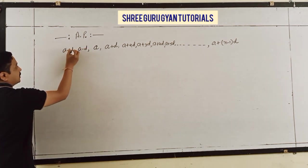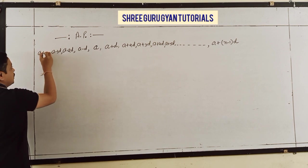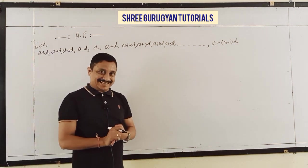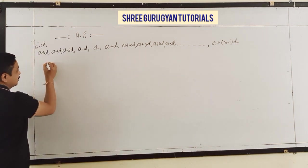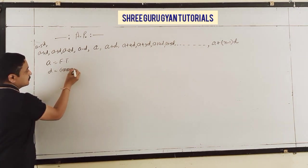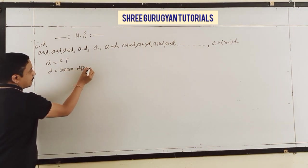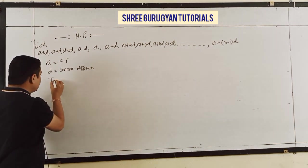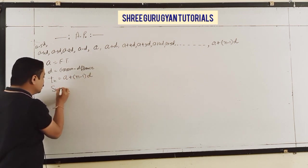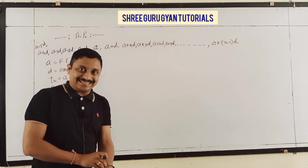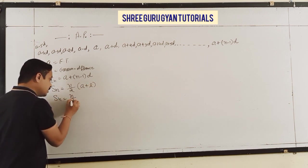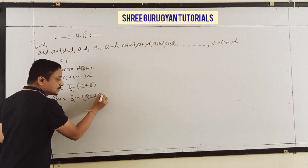You can also go backwards: A-D, A-2D, A-3D, A-4D, A-5D. In this, A is the first term, D is the common difference. TN (last term) = A + (N-1)D. SN = N/2 × (A + last term), or equivalently N/2 × (2A + (N-1)D).